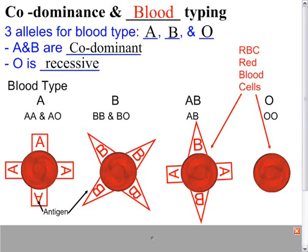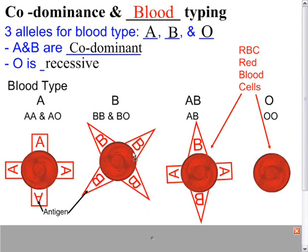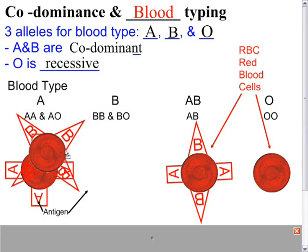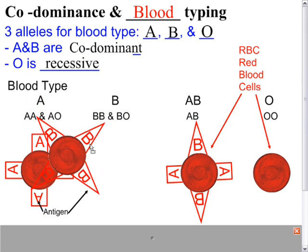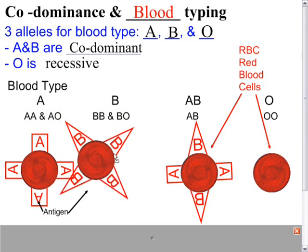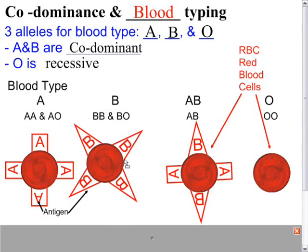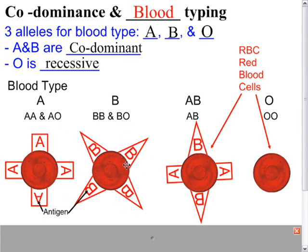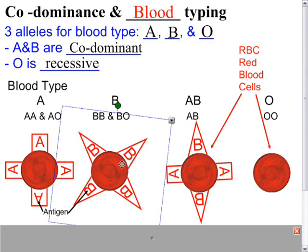In terms of blood donation, if you have type A blood and you are given type B blood, your body is exposed to the B antigen for the first time and your immune cells will attack it. The blood will clot, your kidneys will fail trying to get rid of all this clotting blood, and you will die. It's very serious to be given the wrong blood type.